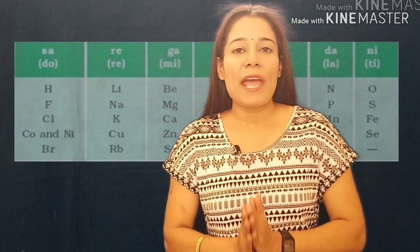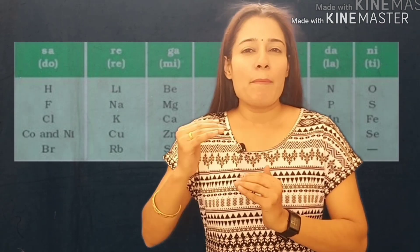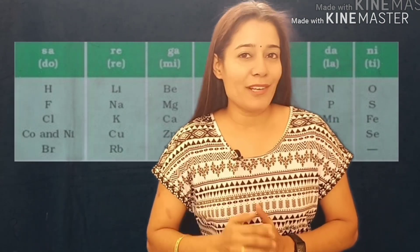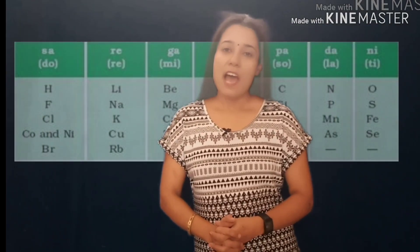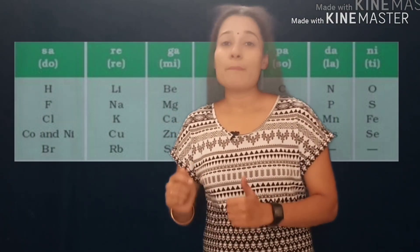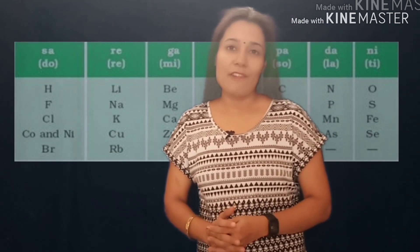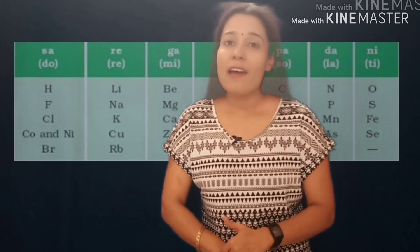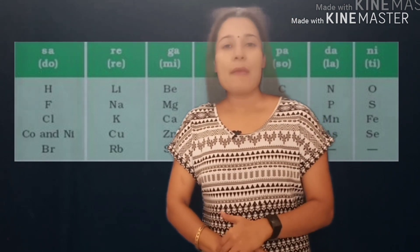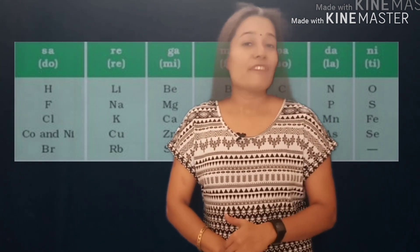Now let me tell you an easier way to learn a part of this table so that it would be easier for you to learn it. Let's see how: Hefkal Konibar, Linak Si Urab, BMG Kazansar, Belkrai Si Enla, Si Si Ti Inzer, PMNS OS Fese.